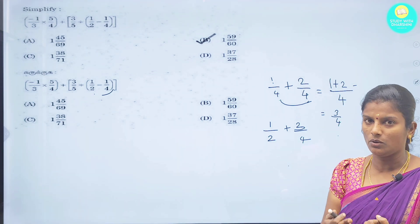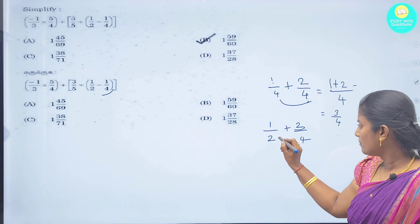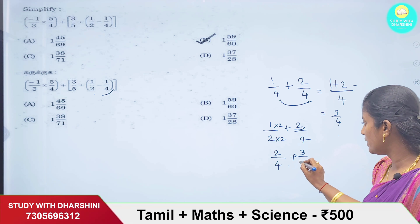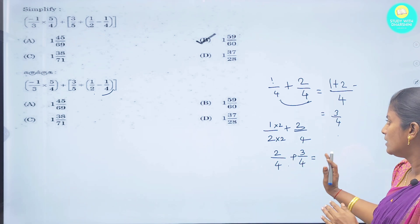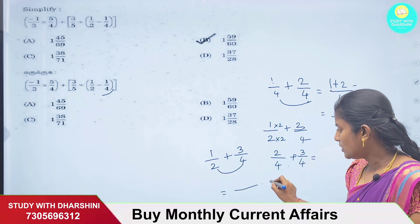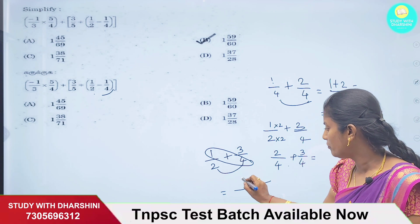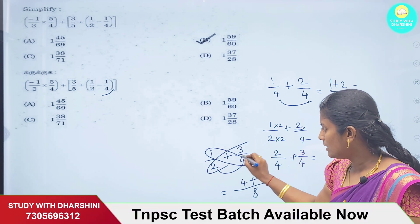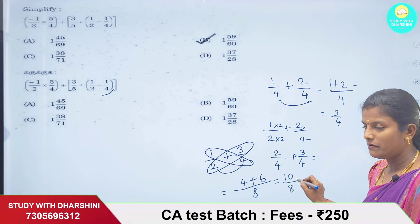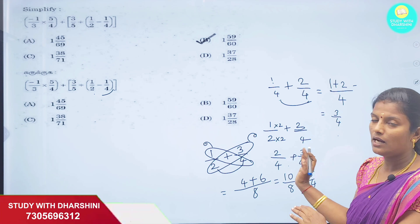Now, what do we use? We know the LCM method — we can use it. We can also use the butterfly method. If we use the LCM method, we find a common denominator and add. But we can also solve using the butterfly method. In the denominator, numbers are multiplied: 2 fours are 8. In the cross, numbers are multiplied: 1 into 4 is 4, and 2 threes are 6. So 4 plus 6 is 10 divided by 8. If you simplify, 5 by 4 is the answer. This is what we call the butterfly method.